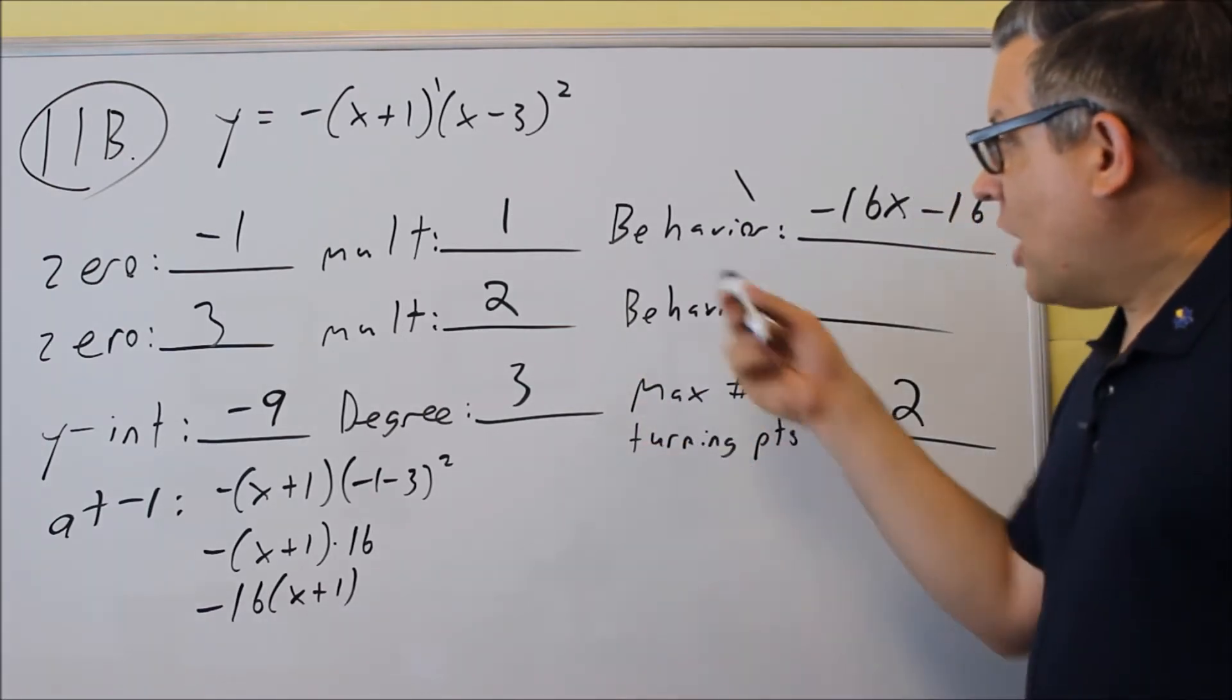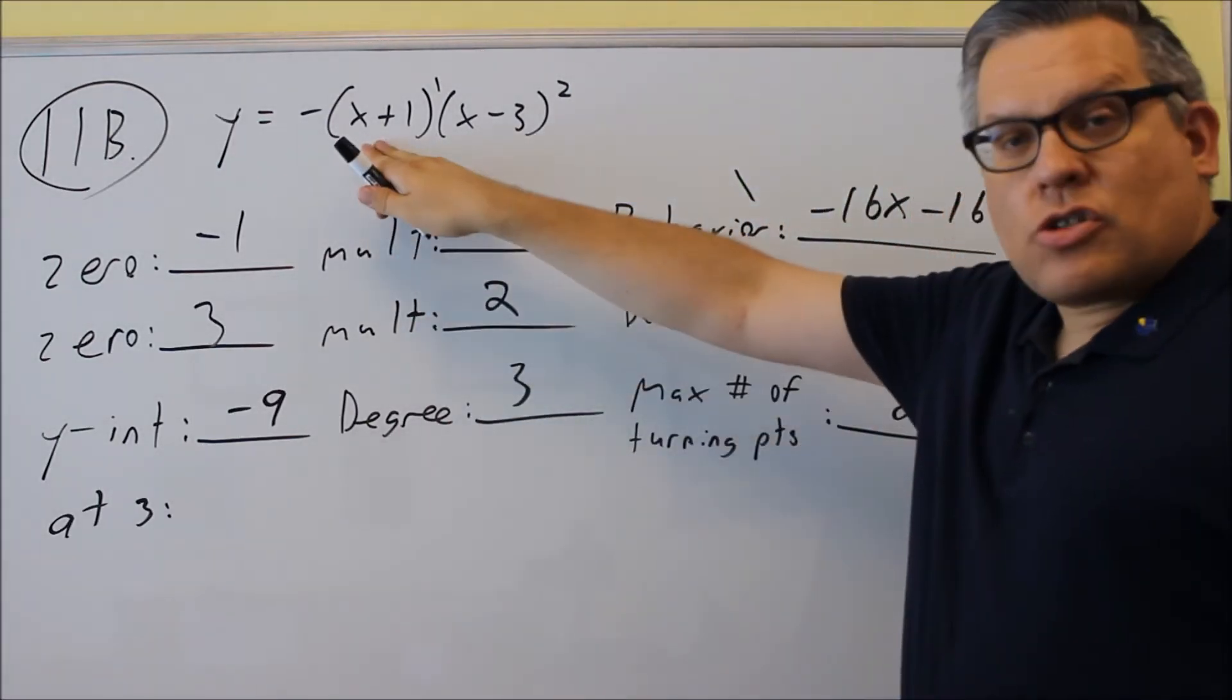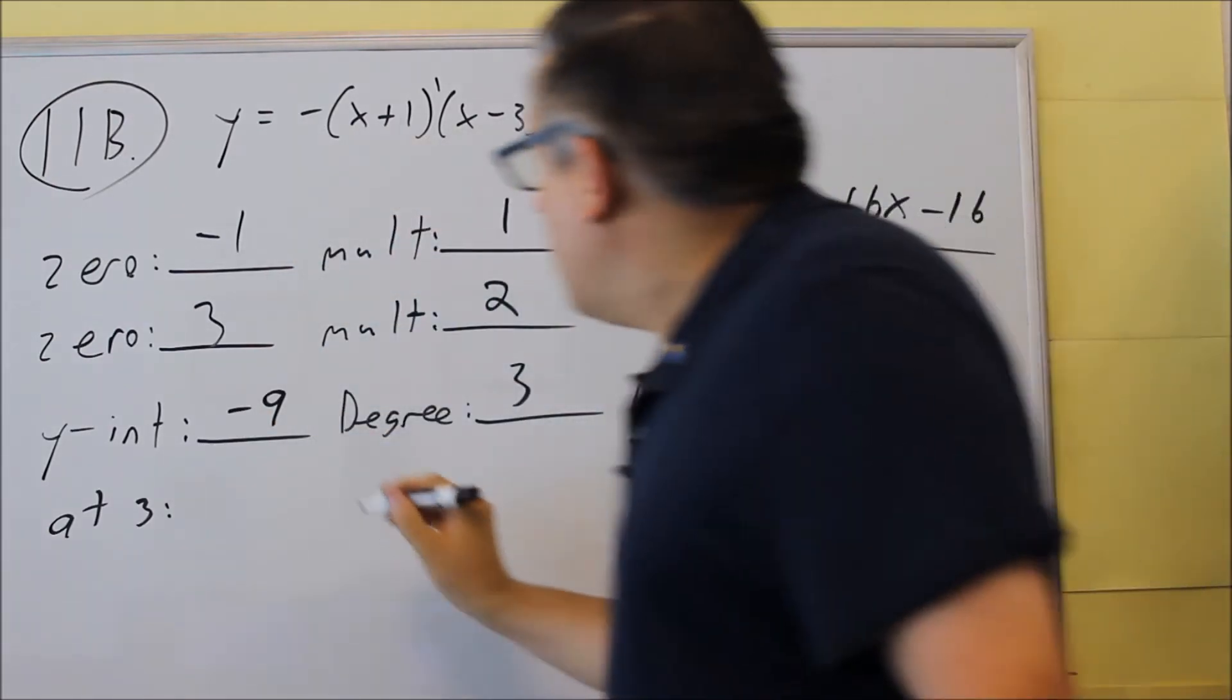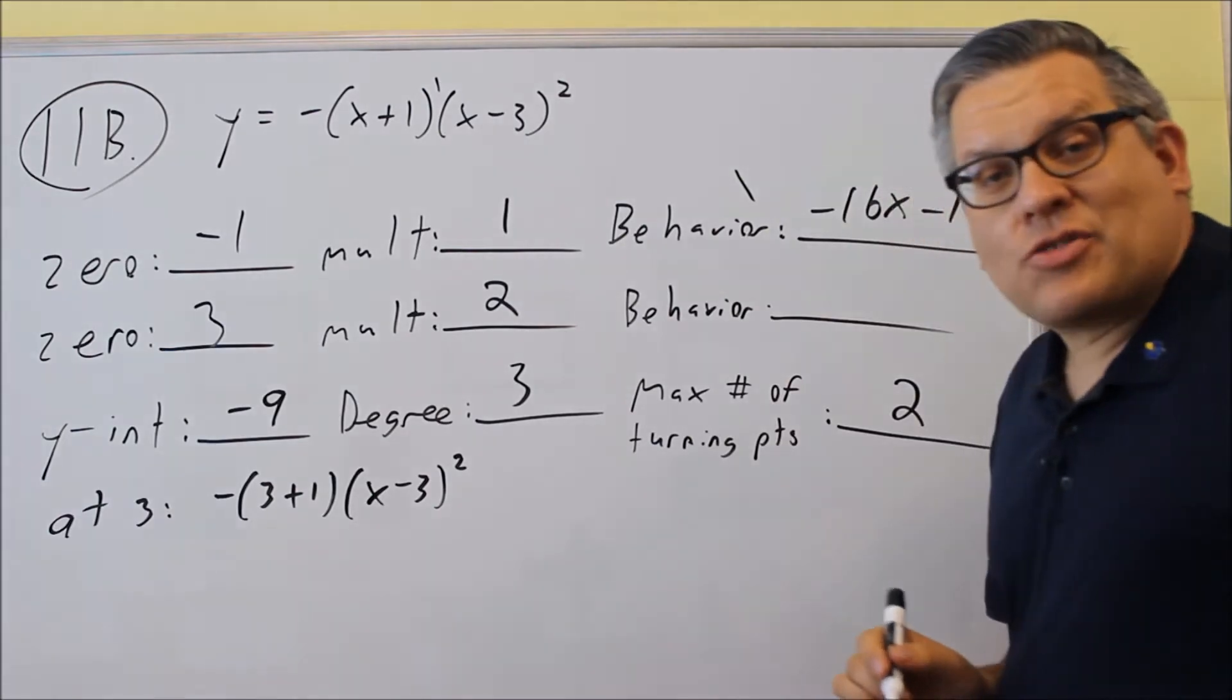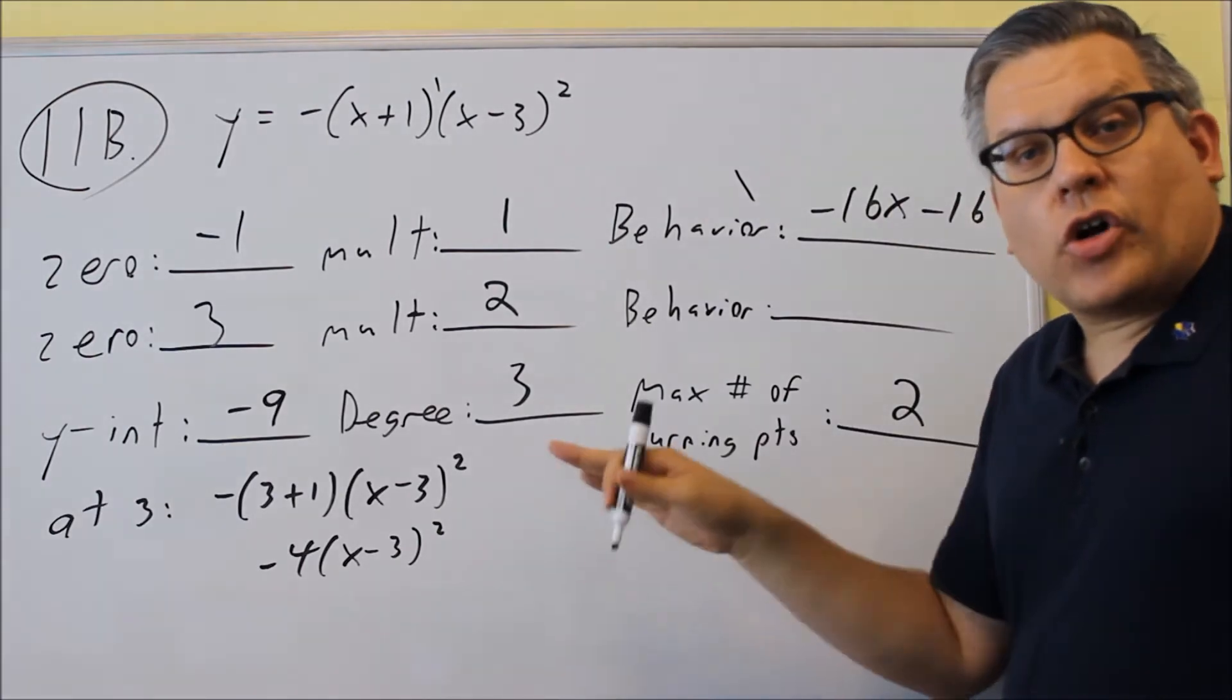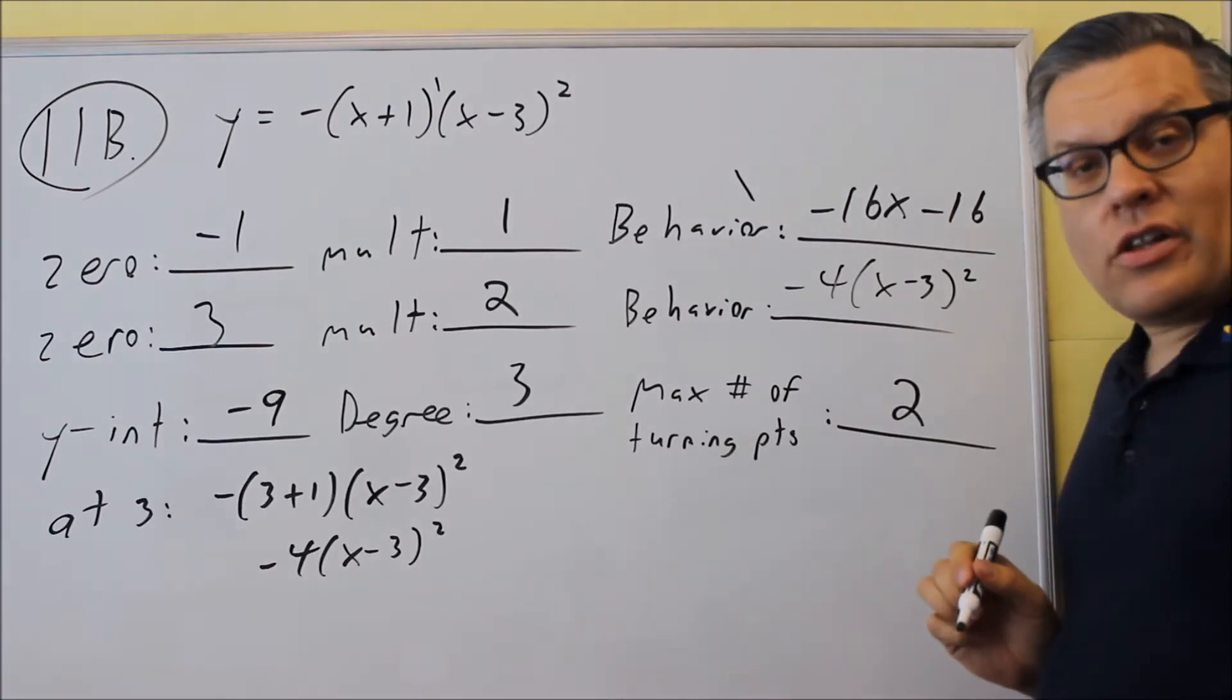So next, I'm going to do the behavior now at three. So if we do the behavior at three, I'm going to put the three into the first one, but I don't want to put a three into the second one because if I put a three into the second factor, I get a zero and the whole thing cancels out. So I'm just going to put three into the first one only, so I get negative three plus one, and I'm going to leave this exactly the way it is, just leave it as x minus three squared. I can simplify the first part, that's going to give me a four. So I have negative four x minus three squared. If you have a square or a cube, you don't have to multiply that one out on a test. It's okay to leave your answer in that form.